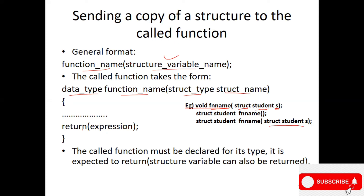In the function, we have the return statement, which is the expression — you can return a structure variable as well. The called function must be declared for its return type. The return type is the structure type, meaning the function is expected to return the corresponding structure variable. The structure variable is returned from the function.